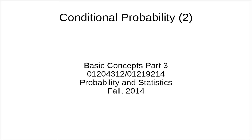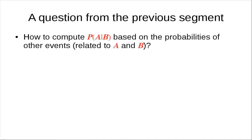In this clip, we will continue with conditional probabilities. The question from the last segment is: how to compute the probability of an event A, given that event B has occurred, using the probabilities of some other events.